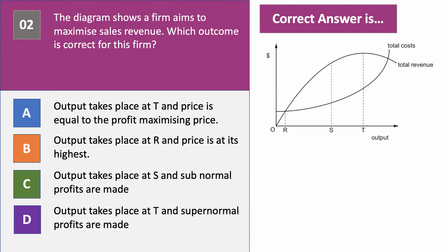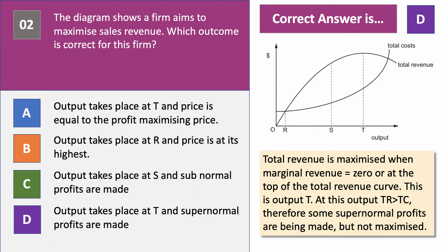The firm is aiming to maximize revenue, which is going to be output T. The answer is D — you maximize revenue at the top of the total revenue curve, that's output T. At this output, the firm's total revenue still exceeds their costs. The break-even output is a little to the right of output T, so some supernormal profits are being made but they're not being maximized — the biggest vertical distance between total revenue and total cost is at output S. So the answer to question two is D.